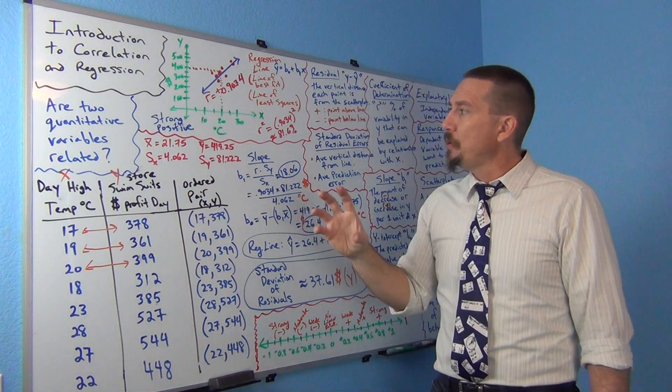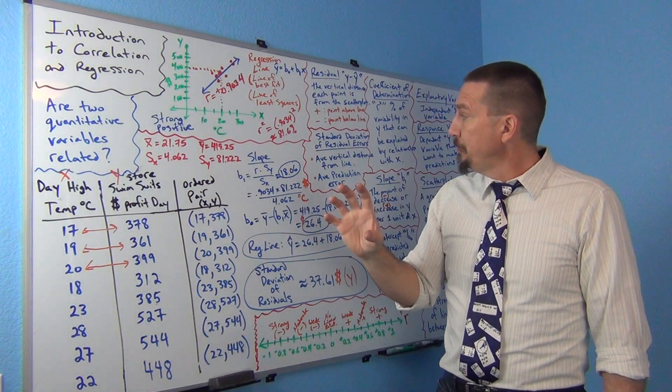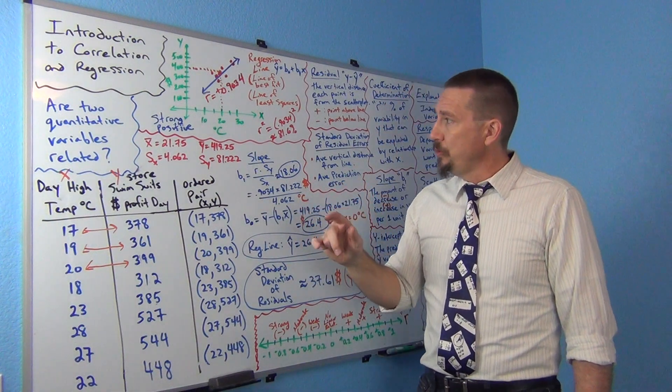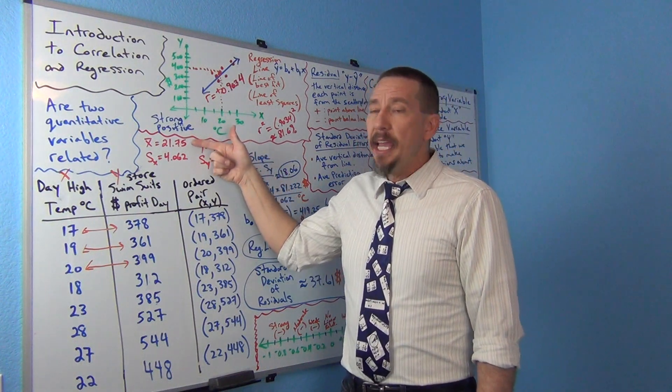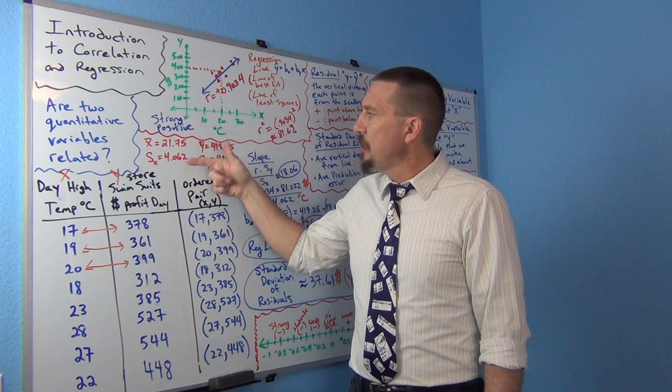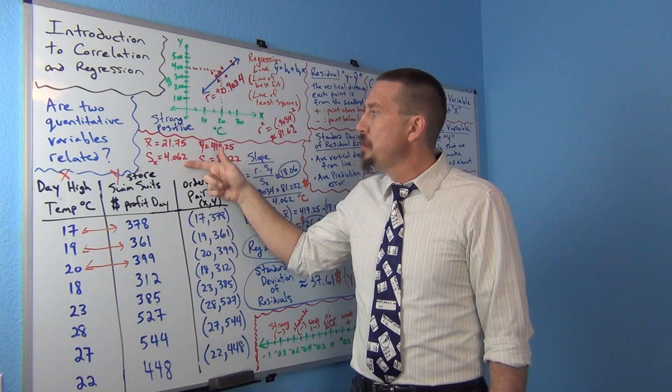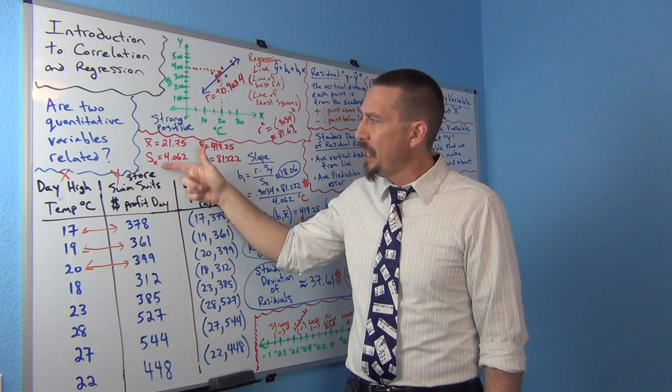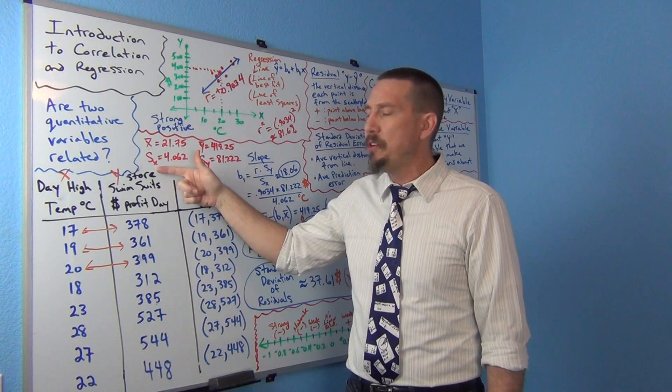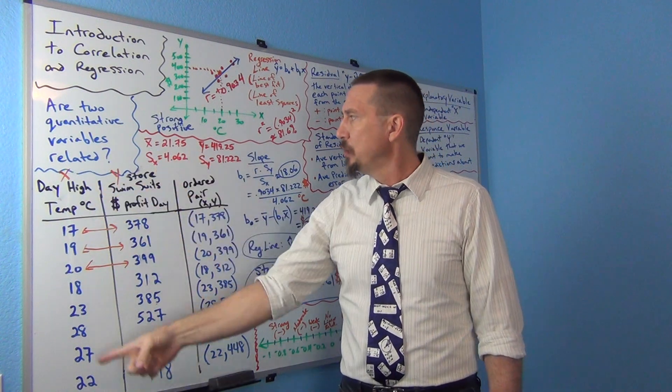there's basically a couple major formulas that we use. One of the things is you want to figure out the mean of the x values and the standard deviation of the x values. Sometimes you'll see this is x bar and sx. S with this tiny little x next to it just means the standard deviation of the x or the explanatory variable.